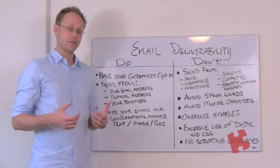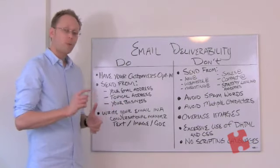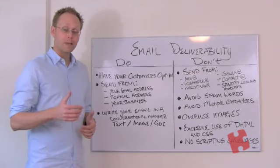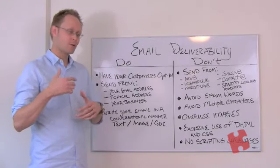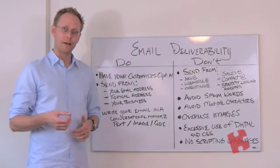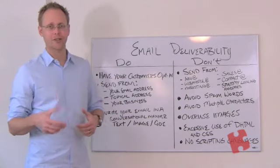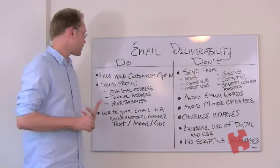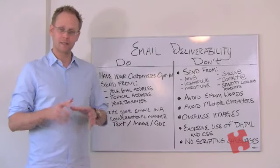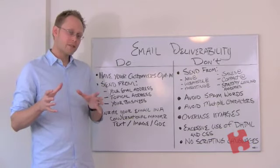So what can you do, and what should you avoid, to get those emails through? Let's talk about the do's. Number one: have your customers opt-in. If you start sending emails out to people and they go to Gmail or Hotmail and people start marking your messages as spam, you're going to have a big problem, because those email providers are going to see all your emails as spam. Make sure people are opting in and getting messages that mean something to them.